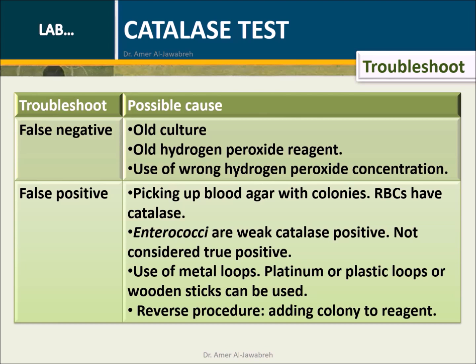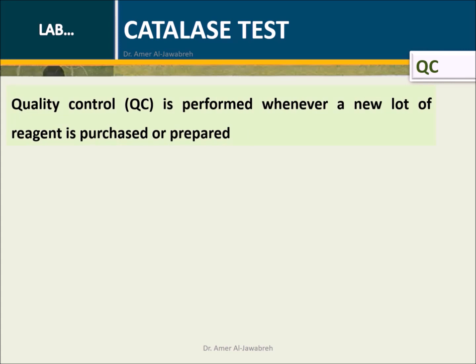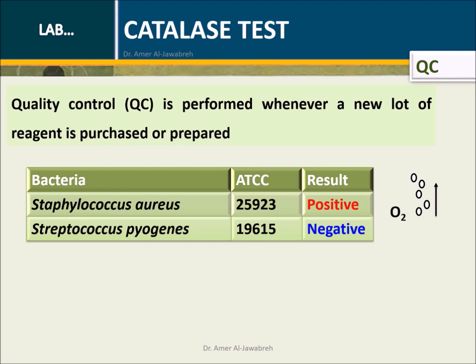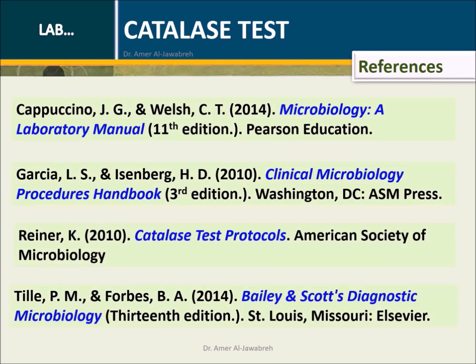Troubleshoots and their possible causes are listed. Quality control is performed whenever a new lot of reagent is purchased or prepared; listed below are ATCC bacteria and their expected results. Report results using the provided form. To be continued.